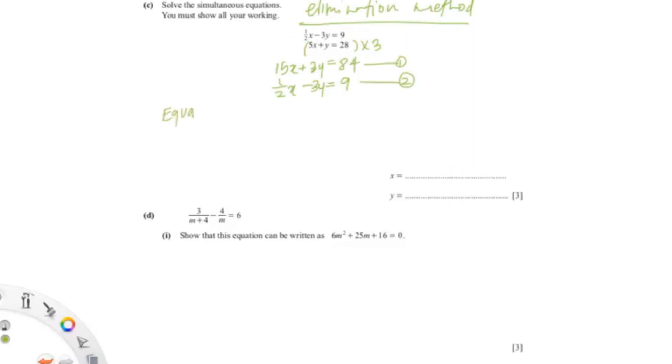So now I'm just going to add these equations so I can get rid of the y variable. But because there are different signs, I'm adding them. And if I were to minus them, they should be the same sign.